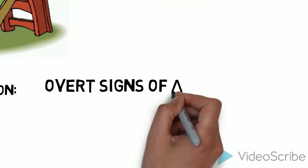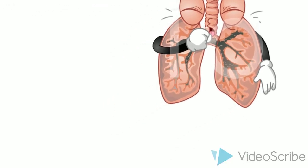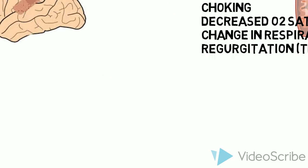Most people recognize aspiration by the overt or most common symptoms. These include coughing, choking, decreased O2 saturation, dramatic change in respiratory rate, and regurgitation.